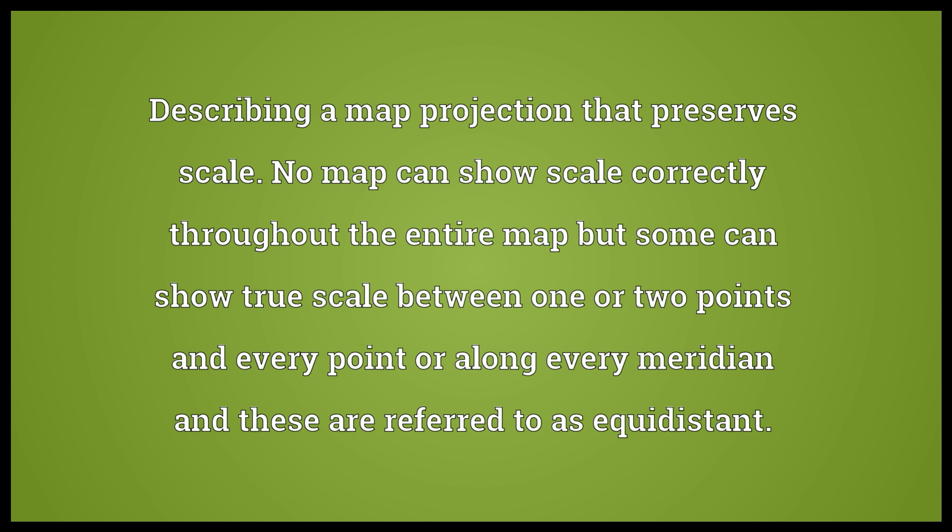Describing a map projection that preserves scale. No map can show scale correctly throughout the entire map, but some can show true scale between one or two points and every point, or along every meridian. These are referred to as equidistant.